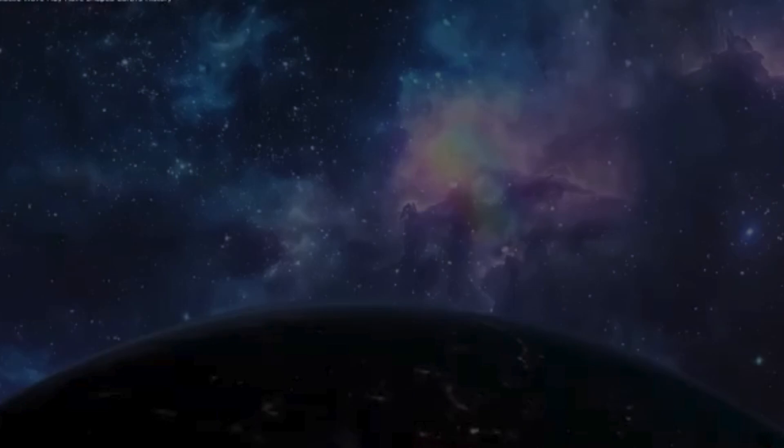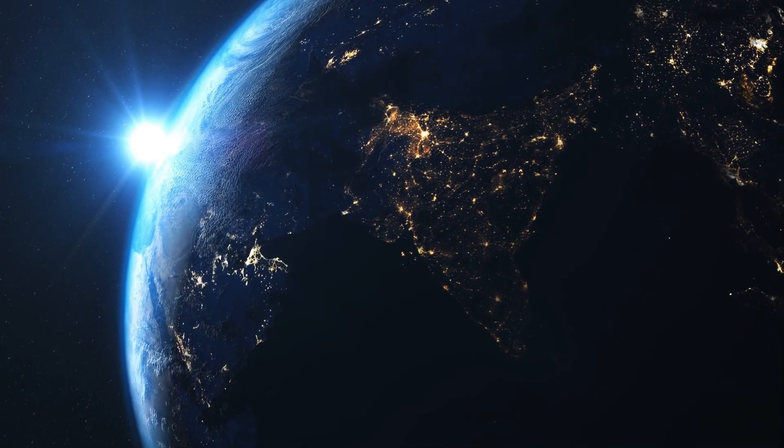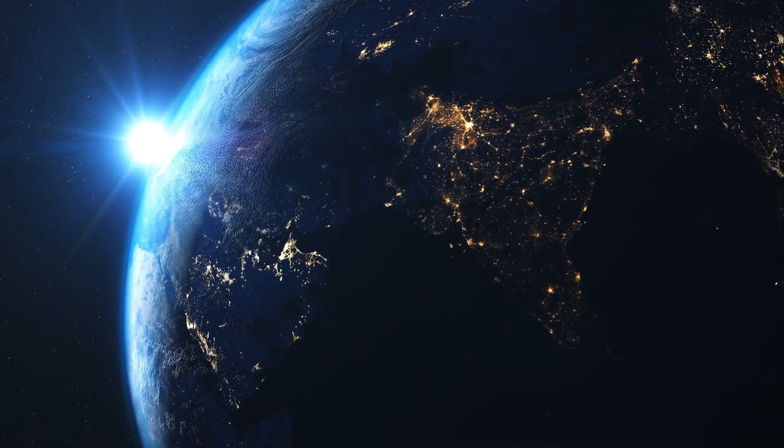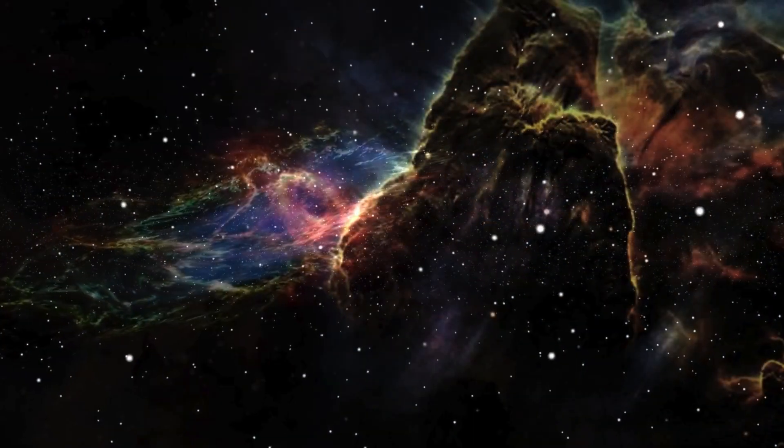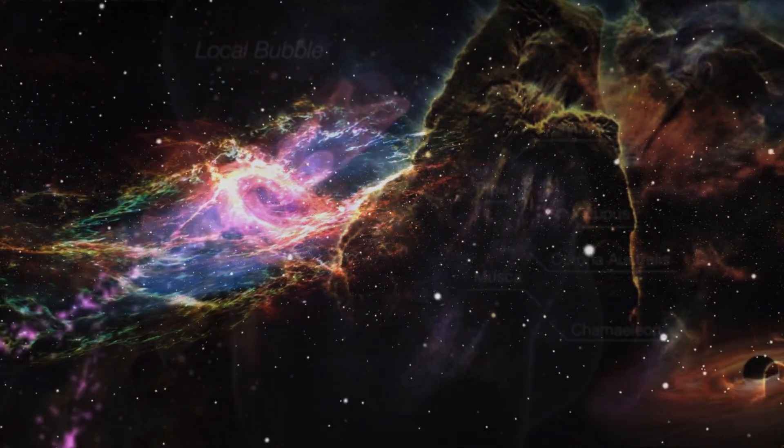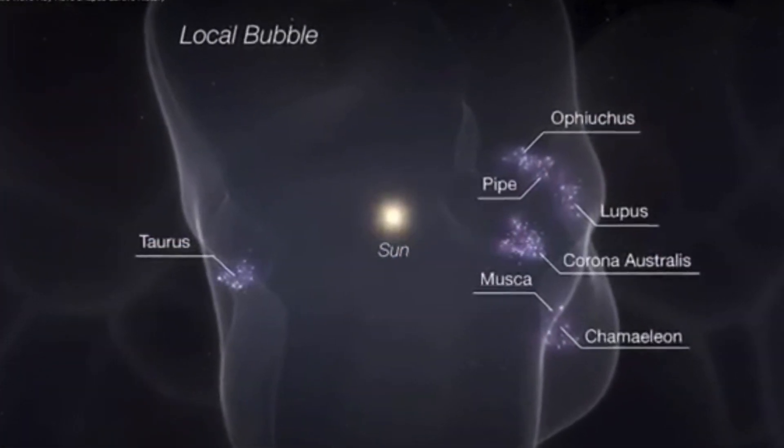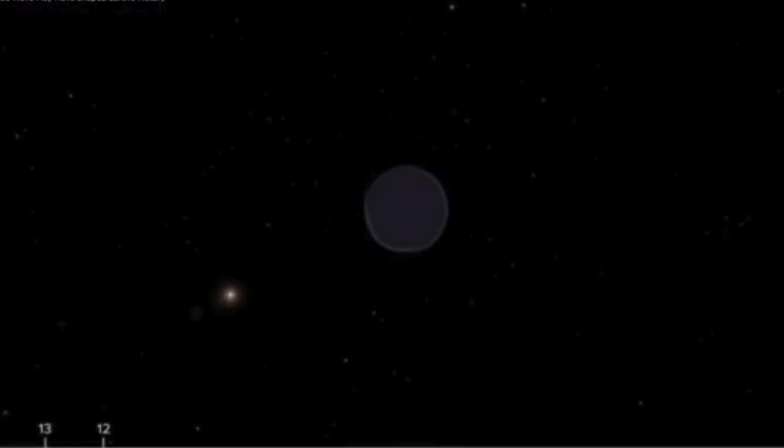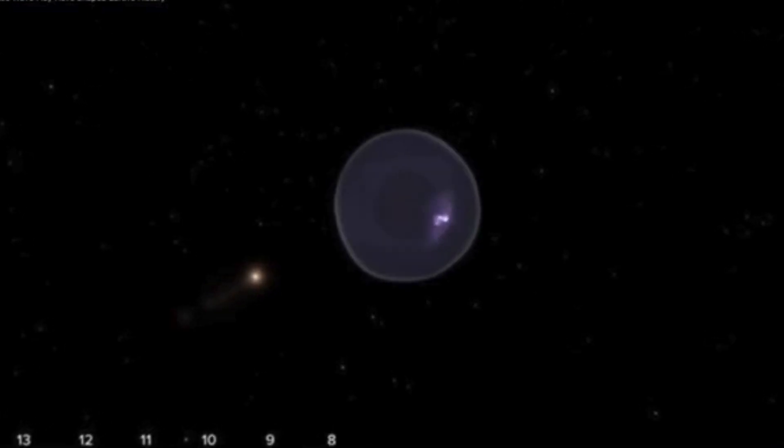If these planets pass through dense interstellar clouds, their atmospheres could also be affected by cosmic dust, radiation, and magnetic shifts. Understanding how Earth responded to these galactic interactions may help astronomers assess the habitability of exoplanets and the conditions necessary for life to emerge elsewhere in the universe.